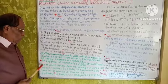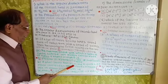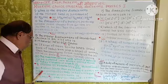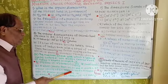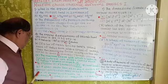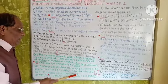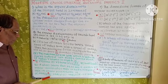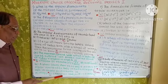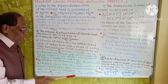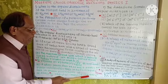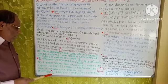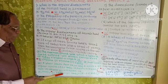Question 6: A wheel starts from rest and acquires an angular velocity of 60 radian per second in half a minute. Then its angular acceleration is: A) 4 radian per second square, B) 2 radian per second square, C) 1 radian per second square, D) 0.5 radian per second square. The correct option is B, i.e., 2 radian per second square.